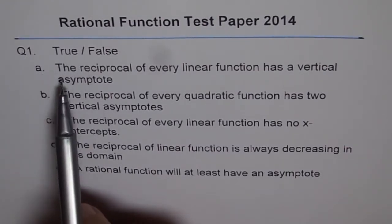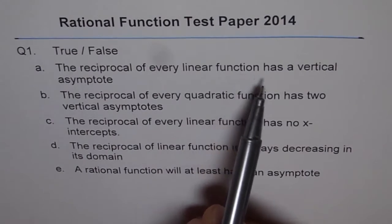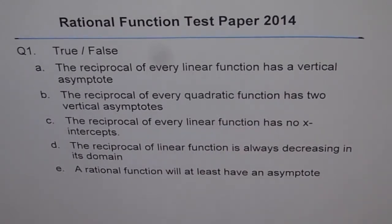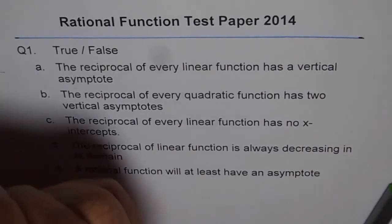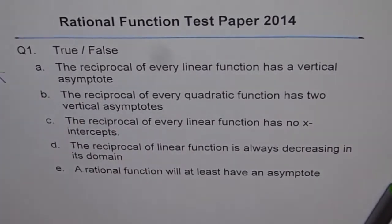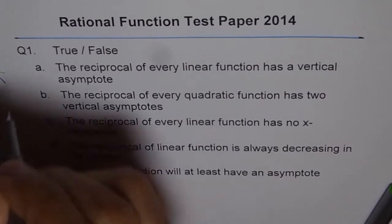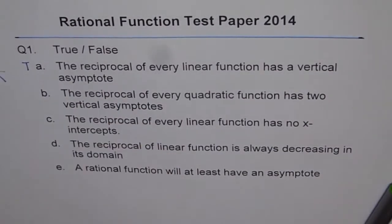True or false? Reciprocal of a linear function has a vertical asymptote. It's true. Let's say we have a linear function. Linear function will always cross x-axis and therefore there will always be a vertical asymptote. So this is true.